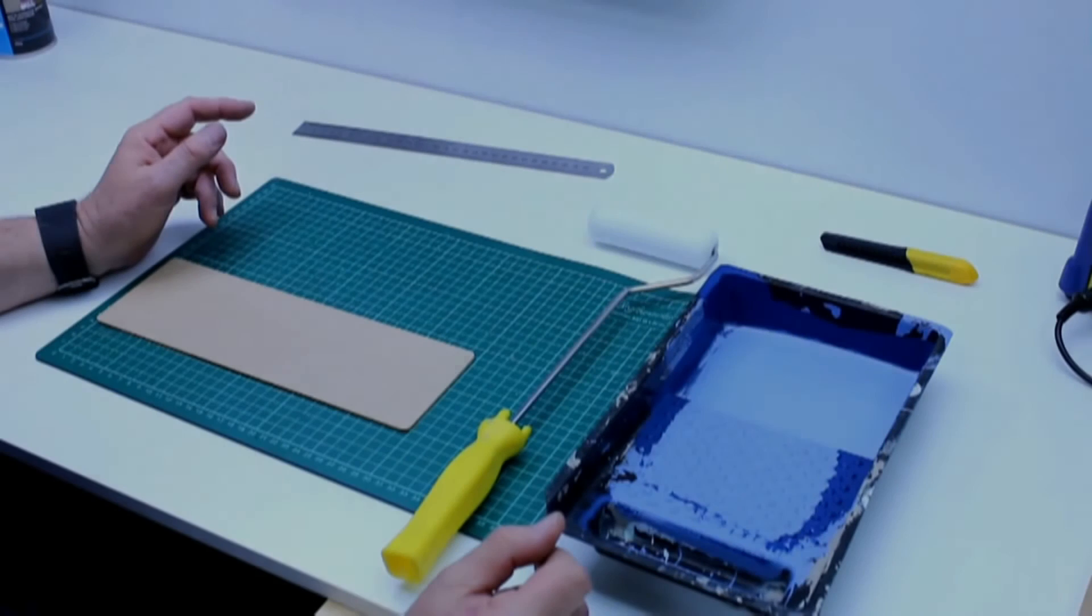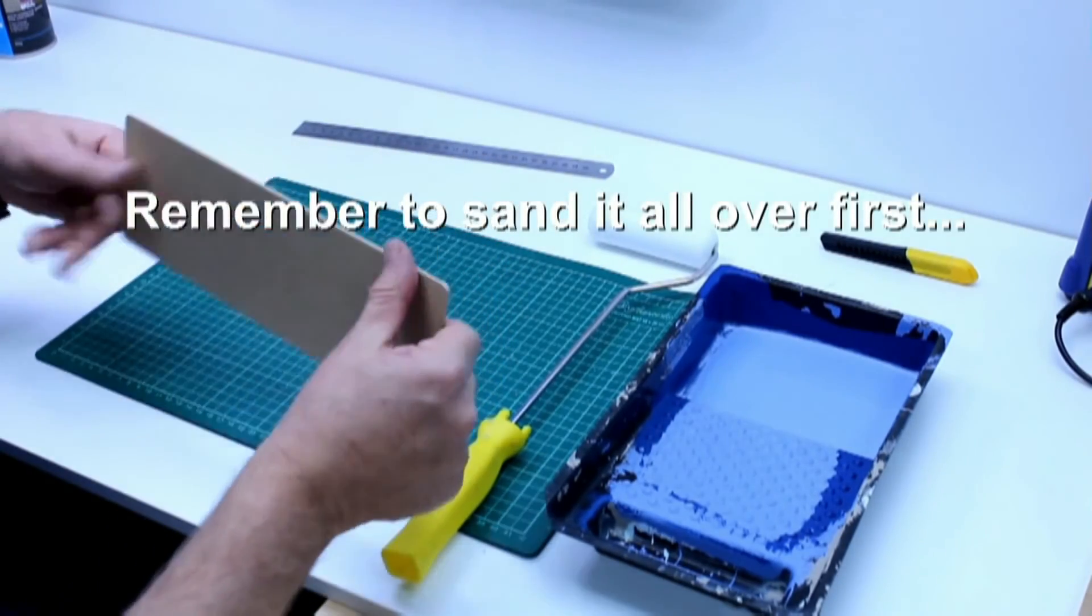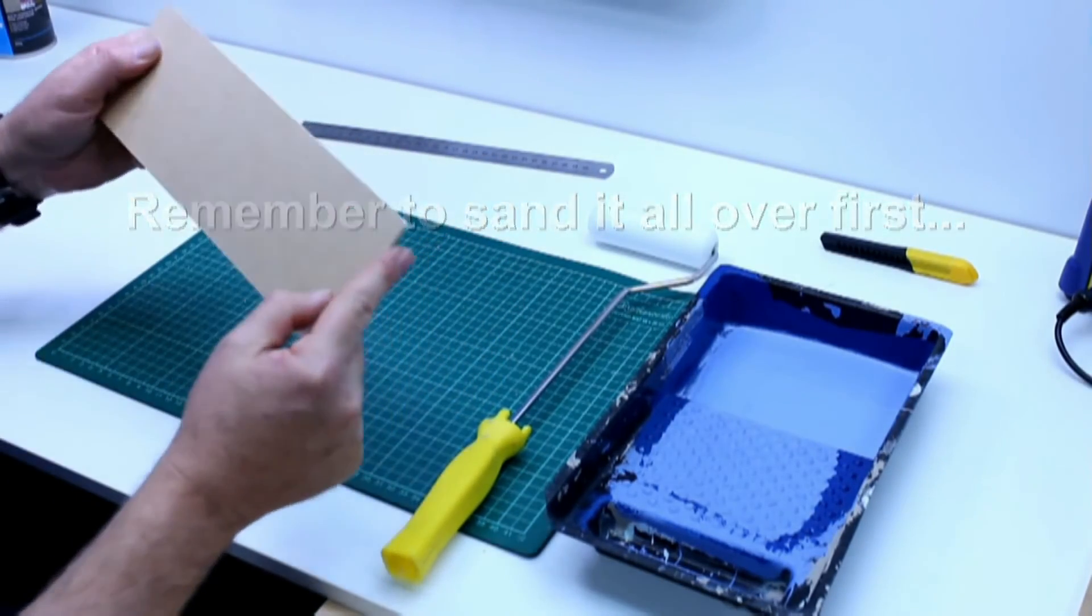Paint the panels on all sides. That means including the edges. Needless to say, you will have sanded it all over first.